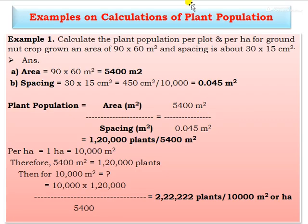Example 1: Calculate the plant population per plot and per hectare for groundnut crop grown in an area of 90 by 60 meters with spacing of 30 by 15 centimeters. The area is 60 × 90 = 5,400 m². The spacing is 30 × 15 = 450 cm².